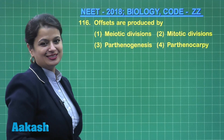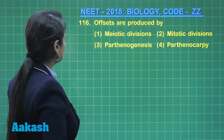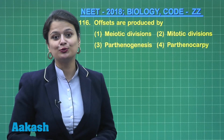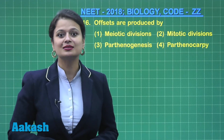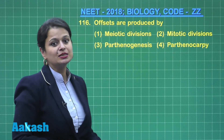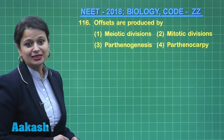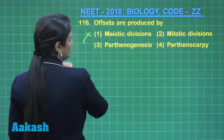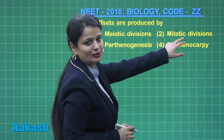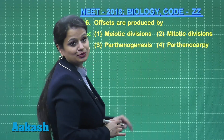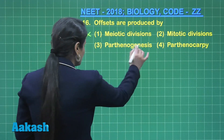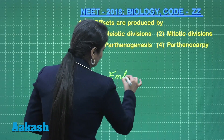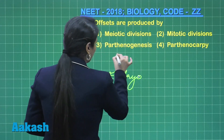Coming to question number 116: offsets are vegetative propagules produced in plants like Eichhornia. Offsets are seen in several water plants and are involved in vegetative reproduction, so meiotic division will not occur — mitosis will surely occur. Now, parthenogenesis is the formation of an embryo from a female gamete, that is, an egg.